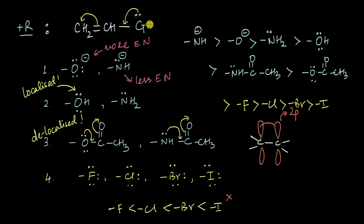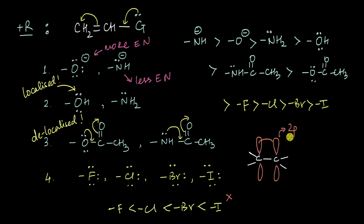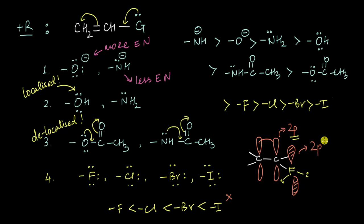Whenever we talk about electron donation to a pi system, we are talking about donation to a carbon-carbon pi system made up of two 2p orbitals. Now, oxygen, nitrogen, and fluorine all belong to the same period as carbon, so their lone pairs also lie in 2p orbitals. The lone pair on fluorine, oxygen, and nitrogen all belong to 2p orbitals — so the orbital overlapping with this pi system is energetically similar to the 2p orbital of the pi system.